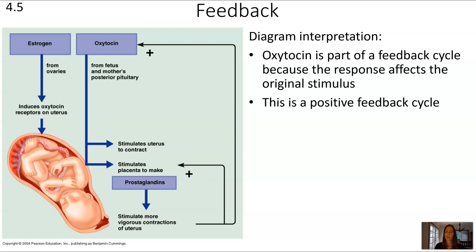The hormone showing as part of a feedback cycle is oxytocin. And the reason there is because the response affects that original stimulus. So it just goes round and round and round where the stimulus causes a change that eventually causes the change to the stimulus. And this can actually get carried away because this is a positive feedback cycle.